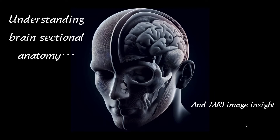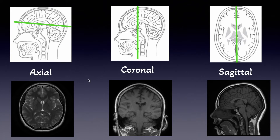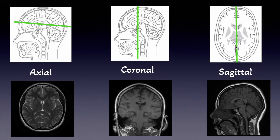Hello everyone, it's Schematic Mad and today we're going to talk about brain sectional anatomy and MRI insight. We're going to talk about three planes: axial, coronal, and sagittal. Axial plane is a horizontal plane that divides the body part into upper and lower portions. A coronal plane is a vertical plane that divides the body part into anterior and posterior portions. And sagittal plane is a vertical plane that divides the body part into left and right side.